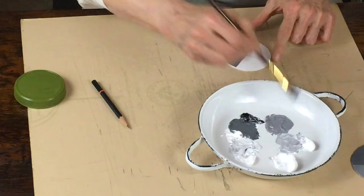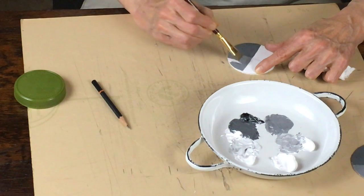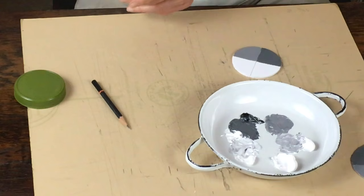And then this is value 6. Here. Here we go. Like that.